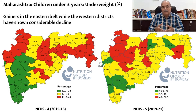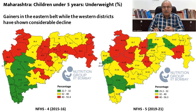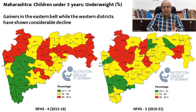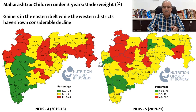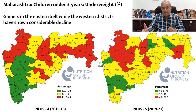To begin with, we look at children under 5 years of age who are underweight. Comparing NFHS-4 and NFHS-5 using the same cutoffs, we see that in NFHS-5 a kind of decline has happened. The greener belt of western districts has shrunk. We also see a corridor — roughly Nandurbar to Gadchiroli, or Thane to Gadchiroli — which has gained during this transition. In a sense, the eastern belt has gained while the western districts have shown considerable decline.